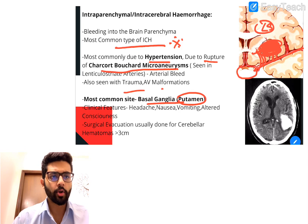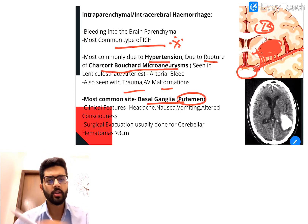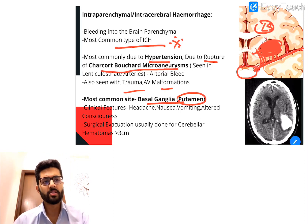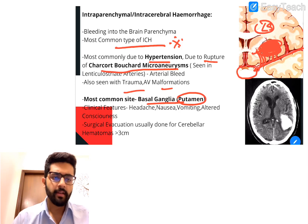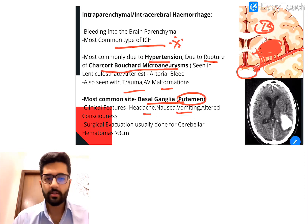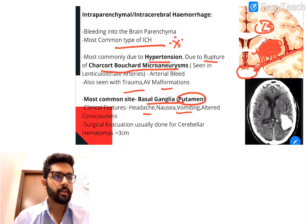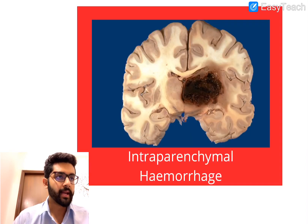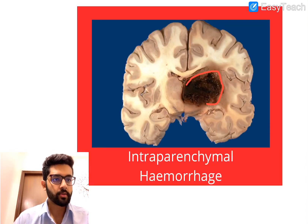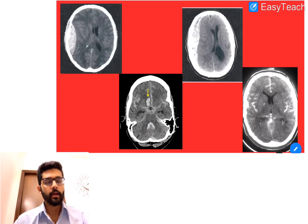Intraparenchymal hemorrhage can also be seen with trauma and AV malformation, but the most important associations to remember are hypertension, Charcot-Bouchard microaneurysms, and the basal ganglia as the most common site. Features include headache, nausea, vomiting, and altered consciousness. On CT, you can see a bleed within the parenchyma itself.